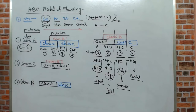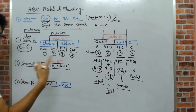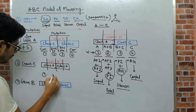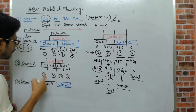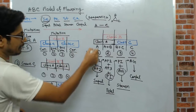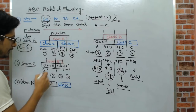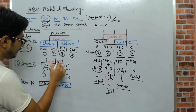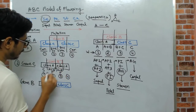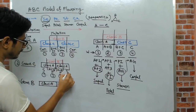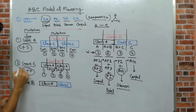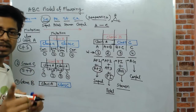For class C gene mutation: Whorl 1 is class A only — sepal. Whorl 2 is A plus B — petal. Whorl 3 is A plus B — petal again. Whorl 4 is A only — sepal again. So if class C is mutated, that plant will have a flower with only sepal and petal.